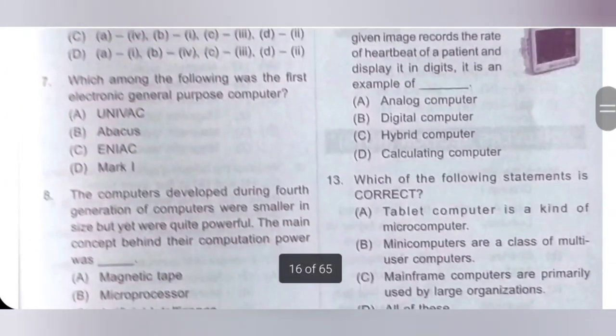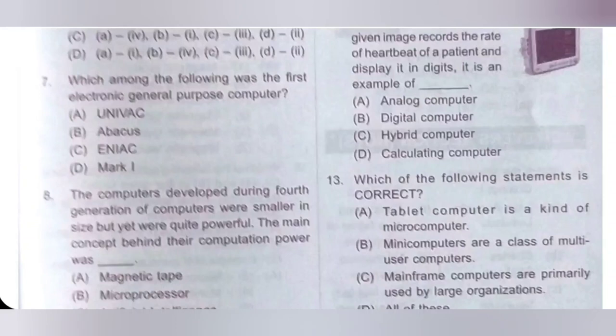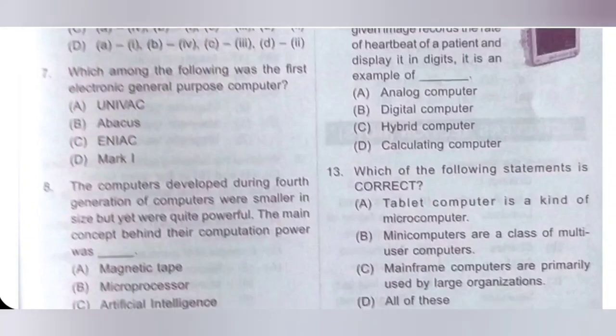7th question: Which among the following was the first electronic general purpose computer? A. Univac; B. Abacus; C. ENIAC; D. Mark I. ENIAC was the first electronic general purpose computer. So option C is the correct answer.